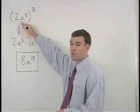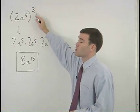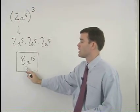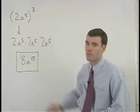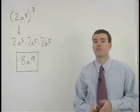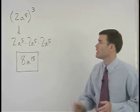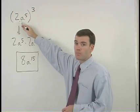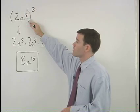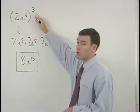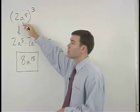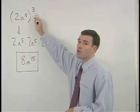But our coefficient is taken to the third power. 2 times 2 times 2 is 8. It's very important to understand the difference between the way you treat exponents and coefficients in this type of problem. Our exponent of 5 is simply multiplied by 3, but our coefficient of 2 is taken to the third power.